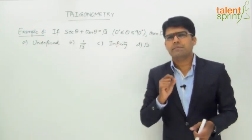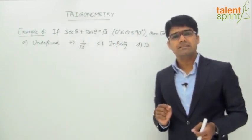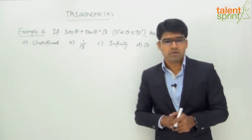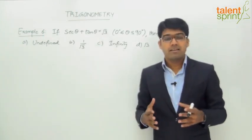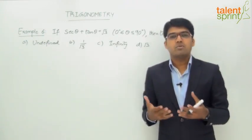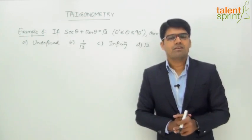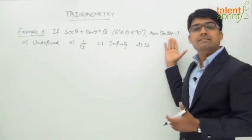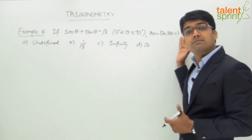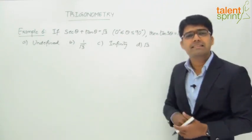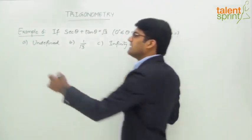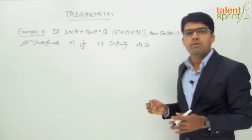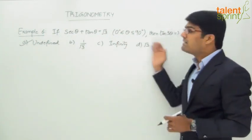Let's try θ = 30°. Secant 30° is 2/√3 and tan 30° is 1/√3. So 2/√3 + 1/√3 = 3/√3 = √3. This balances! So θ = 30°. Therefore tan 3θ = tan(3 × 30°) = tan 90°, which is undefined. The answer is option A: undefined.